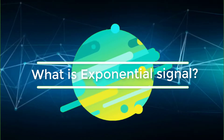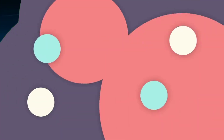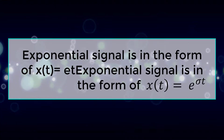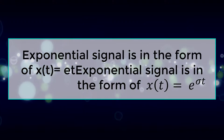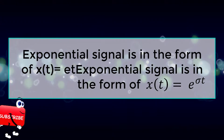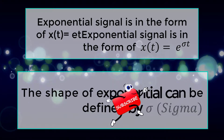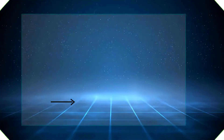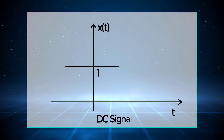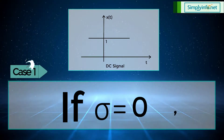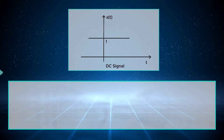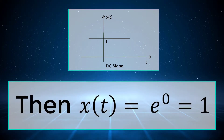What is an exponential signal? An exponential signal is in the form x(t) = e^(σt). The shape of the exponential can be defined by sigma. If sigma equals 0, then x(t) = e^0 = 1.